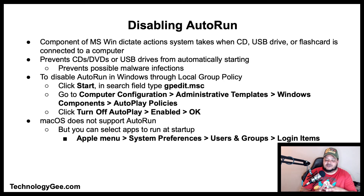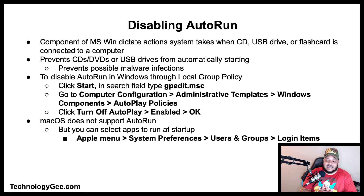AutoRun is a component of Microsoft Windows that dictates what actions the system takes when a CD, USB drive, or flash card is connected. Disabling AutoRun will prevent CDs, DVDs, or USB drives from automatically starting, preventing possible malware from infecting the system before you can scan the media. To disable AutoRun in Windows via Local Group Policy, click Start, type gpedit.msc, then navigate to Computer Configuration > Administrative Templates > Windows Components > AutoPlay Policies > Turn off AutoPlay, click Enabled, then OK. Mac does not support AutoRun, but you can manage startup apps via Apple Menu > System Preferences > Users & Groups > Login Items.